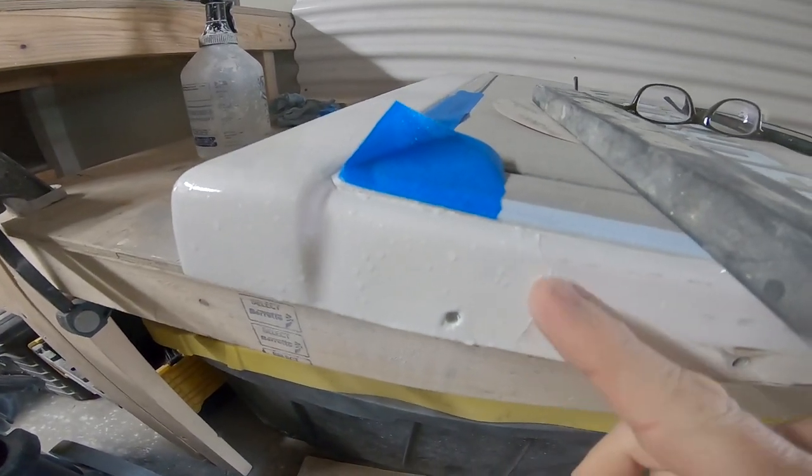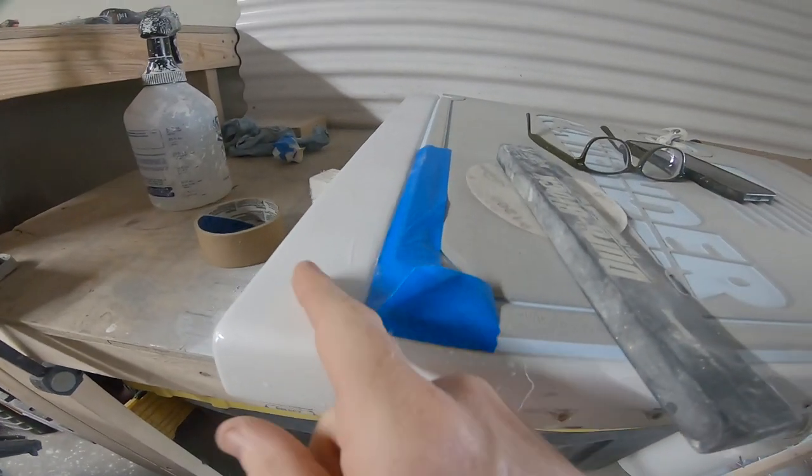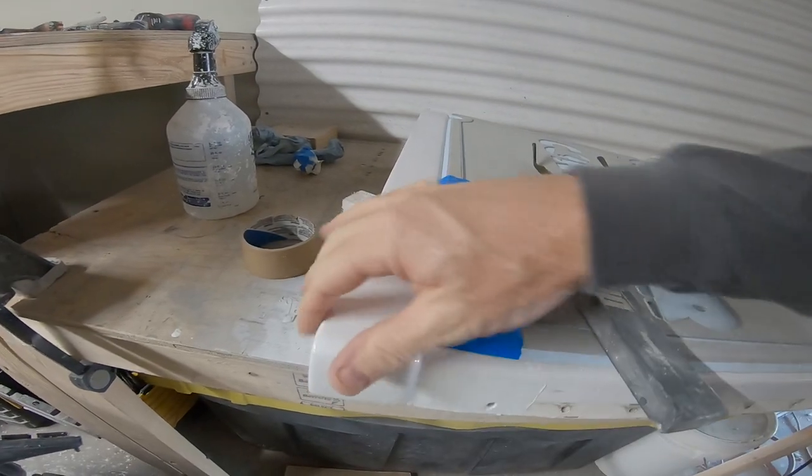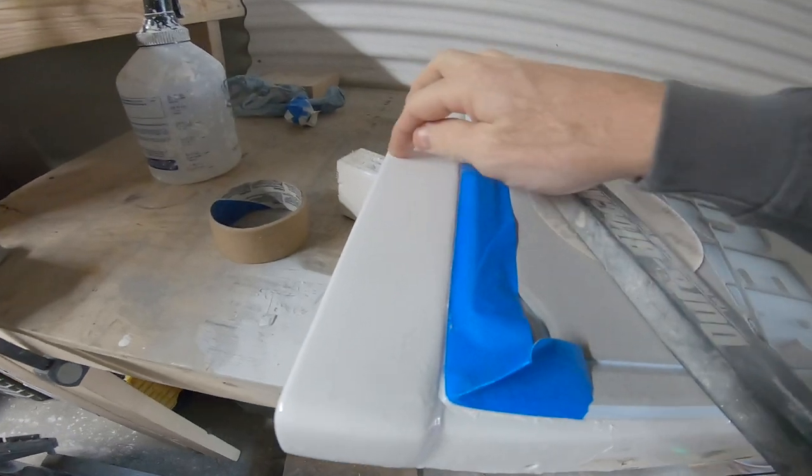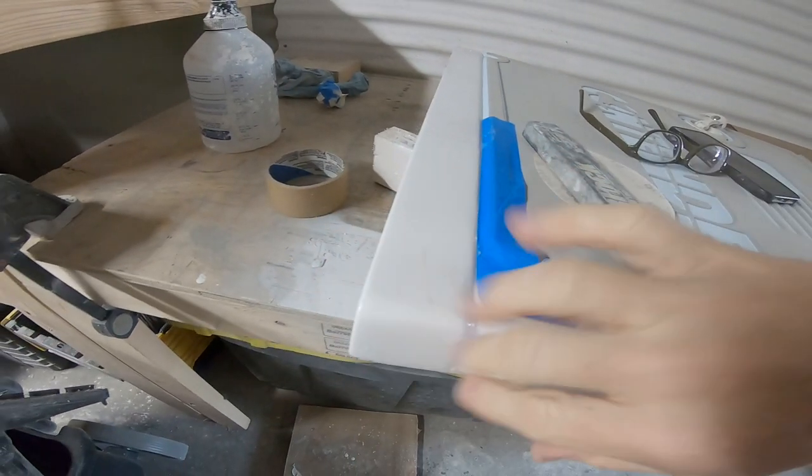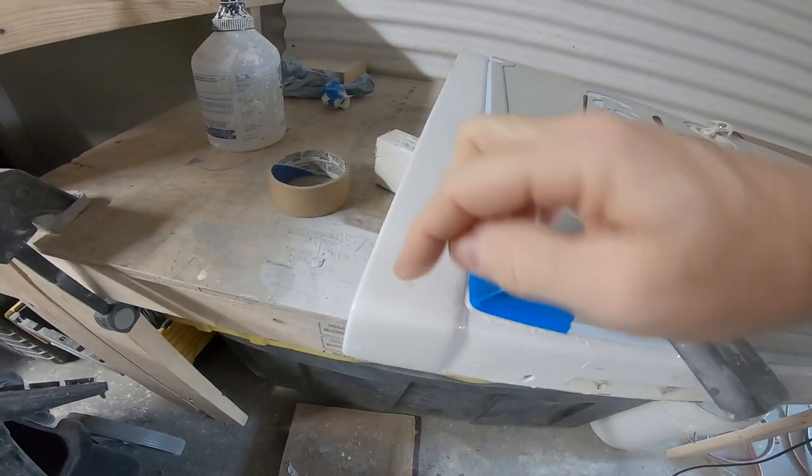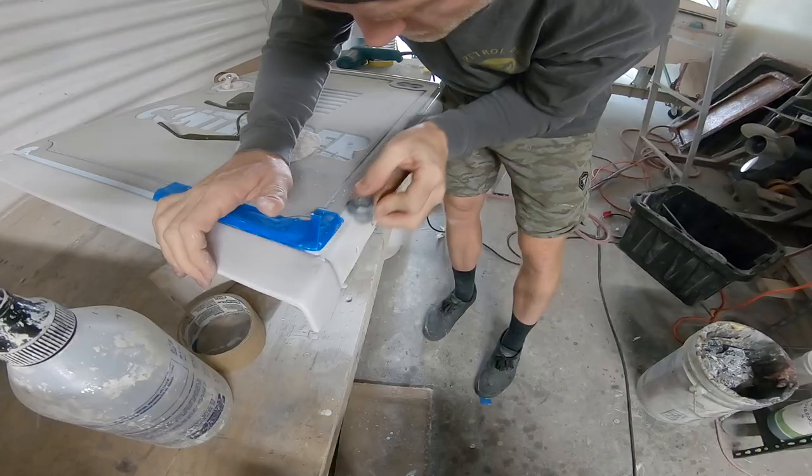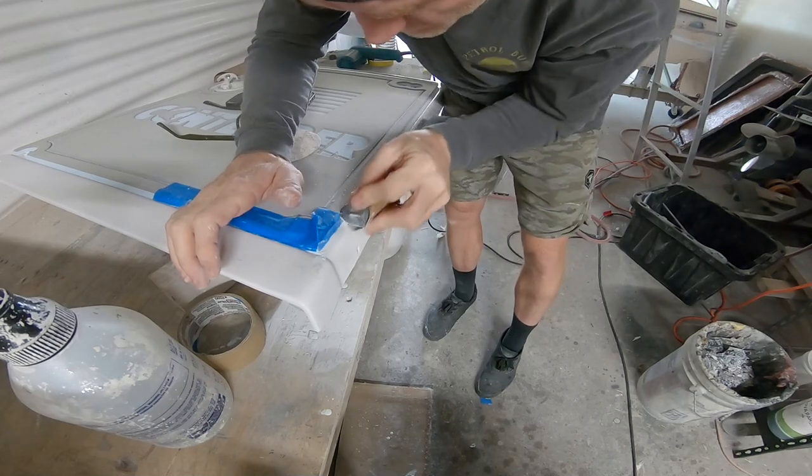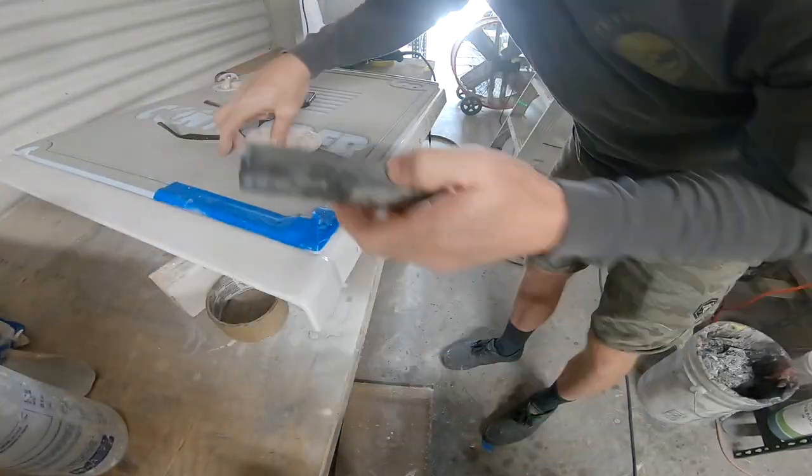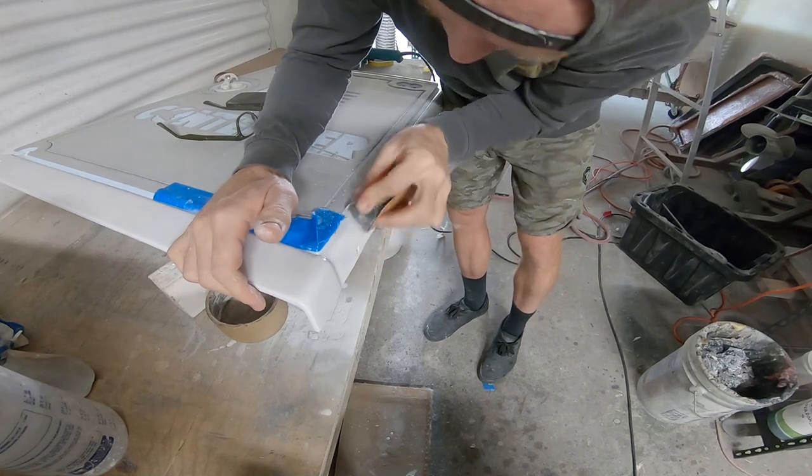So now I'm just going to wet sand that all out. You can see a little high spot there from the tape, no big deal. Just going to blend that polysiloxane out and feather edge it so you really won't be able to see that transition between the new and the old paint.